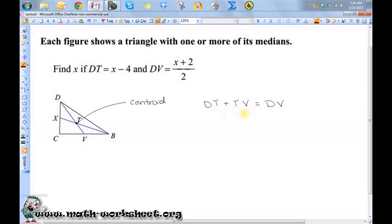So right now I have far too many variables here. I have DT, DV. I know something for those, but I don't know anything for TV. However, because this is a centroid, I know that the length of this segment from the vertex to the centroid is twice the length of this segment here, from the centroid to the midpoint. So I know that DT is equal to twice TV.